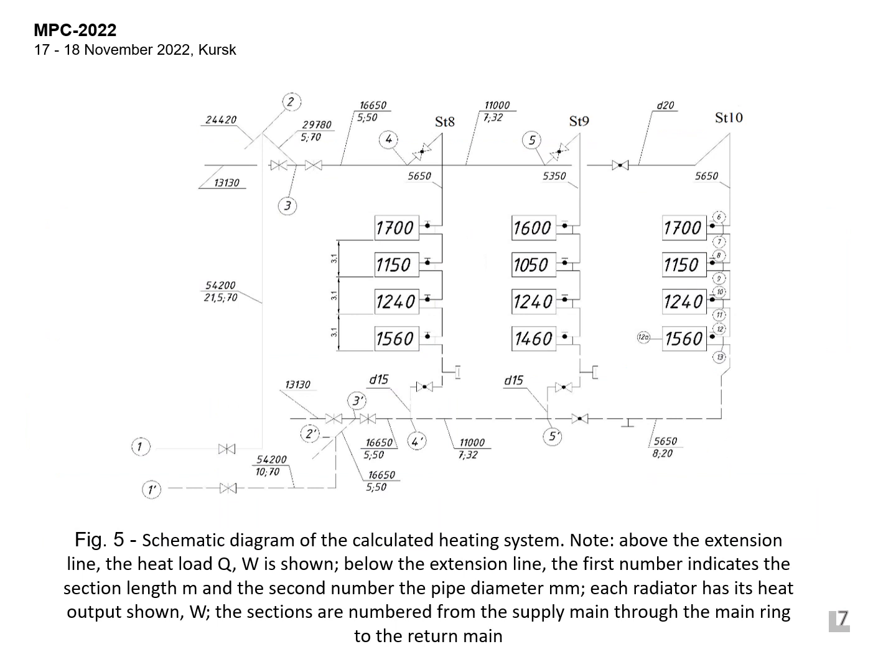Let us calculate a single-pipe heating system with one of the branches shown in figure 5. Calculation of heating pipes will be carried out by the method of dynamic pressures. As the most unfavorable ring, we take the circulation ring including standpipe 10. Let us calculate the same branch of the heating system using several existing hydraulic calculation methods in order to compare the final results. Accordingly, the input data for the following methods will be the same as for the dynamic pressure method.